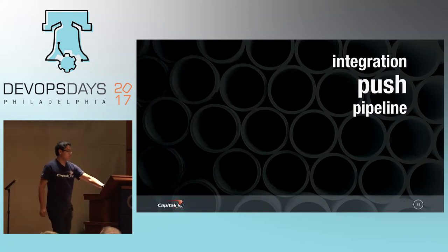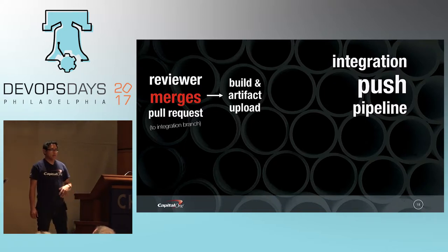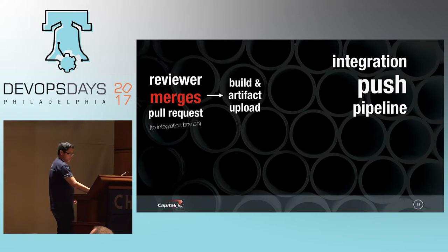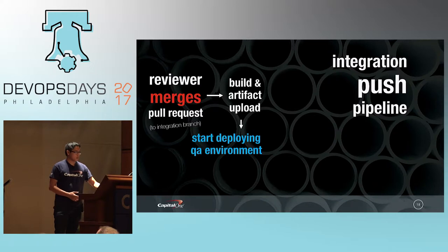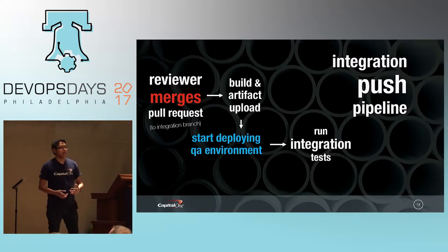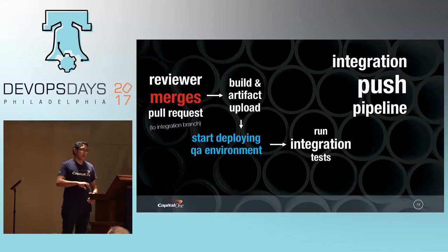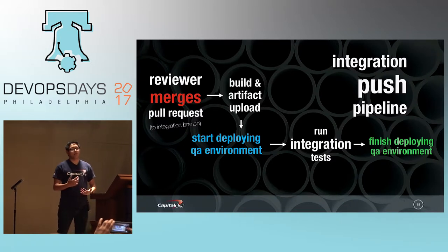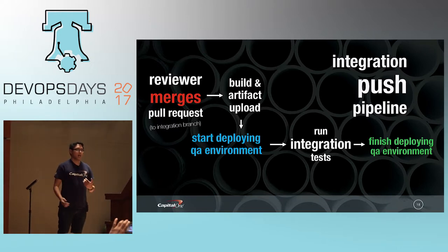Once a pull request gets merged to the integration branch, we build the artifacts and upload to Docker Registry, Artifactory, and so on. Then we start a blue-green deploy of the QA environment. After that deploy starts, we run the integration tests against that new release inside of the integration environment — a Cucumber test suite against a fixed environment that doesn't go away. After the integration tests, we finish the blue-green deploy. This is essentially the feedback loop on your integration branch as pull requests get merged.